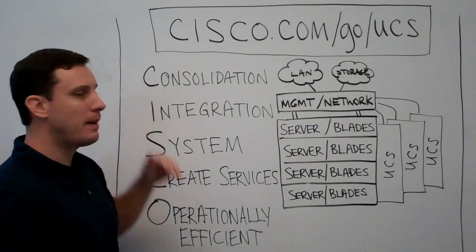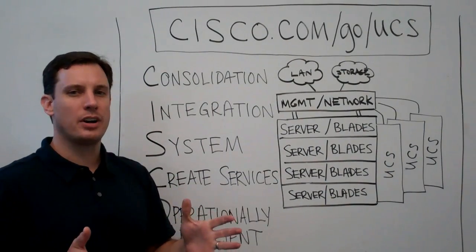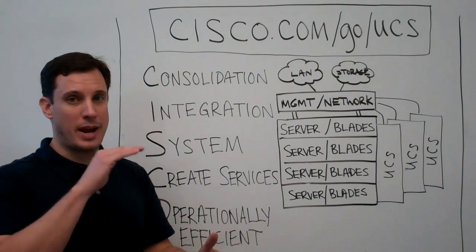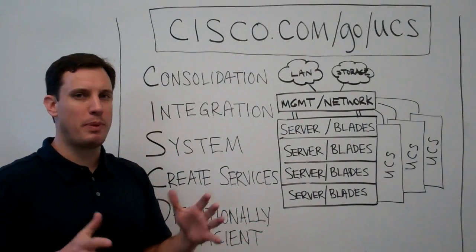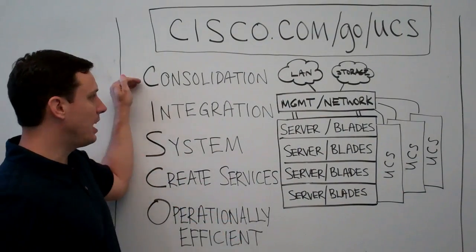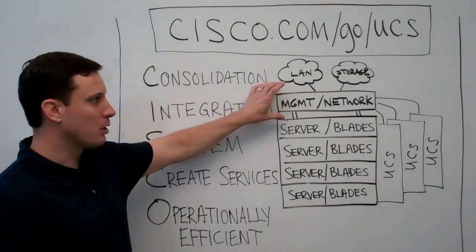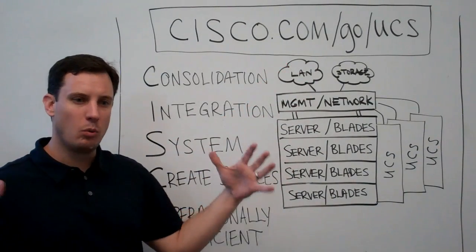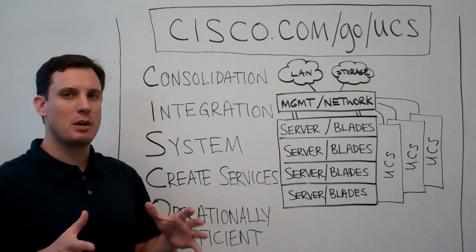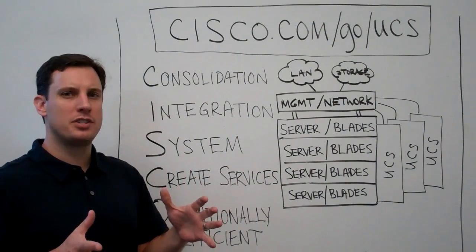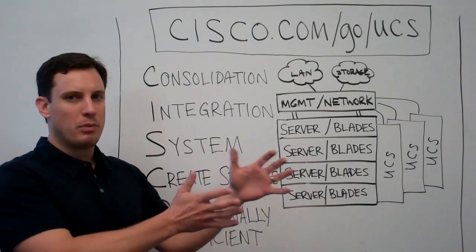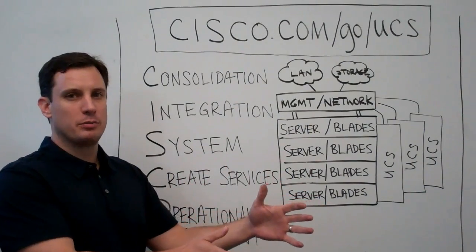First and foremost is about consolidation. Your service provider customers want to know what it's going to cost them per rack space, per rack RU, per footprint, per power, per wattage. The UCS system is the best in the industry at being able to consolidate servers, network management, and the network into one very dense, very highly efficient system. So you can talk about consolidation to help them understand their cost per watt, per gigabyte, per bandwidth, per whatever they're trying to deploy for a virtual machine.